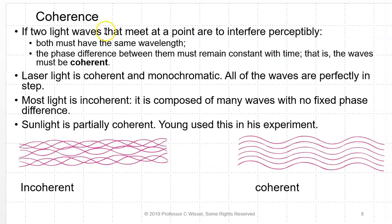Coherence: if two light waves are to interfere perceptibly, they must both have the same wavelength, and the phase difference between them must remain constant with time — the waves must be coherent. Laser light fulfills both of these requirements: it is coherent and monochromatic, with all waves perfectly in step. Most light is incoherent — composed of many waves with no fixed phase difference. Sunlight is partially coherent, which is what Young used in his experiment.